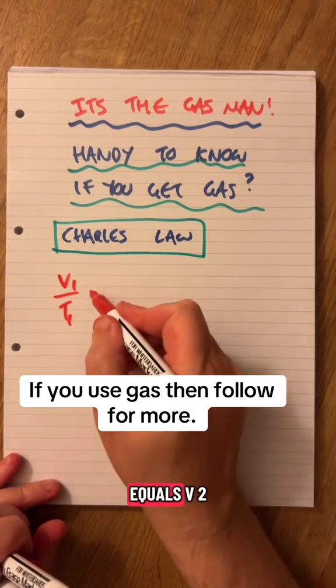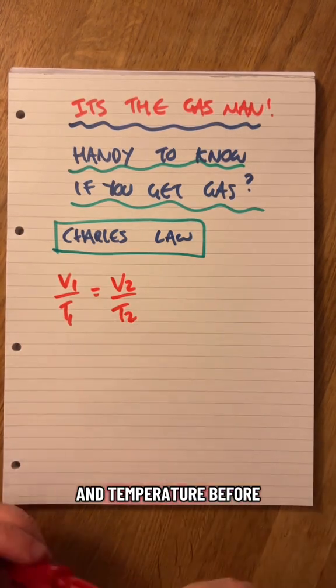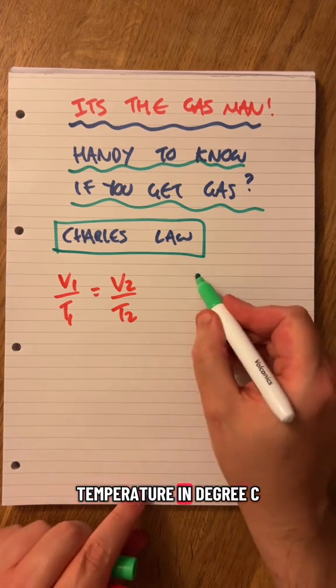V1 over T1 equals V2 over T2. V1 and T1 are volume and temperature before, and V2, T2 are volume and temperature after. Now you might know that if you've got a temperature in degrees C,